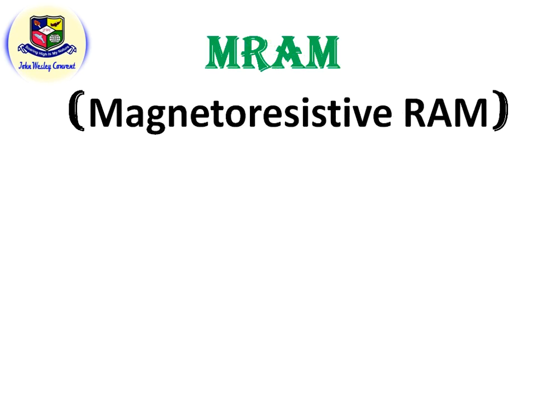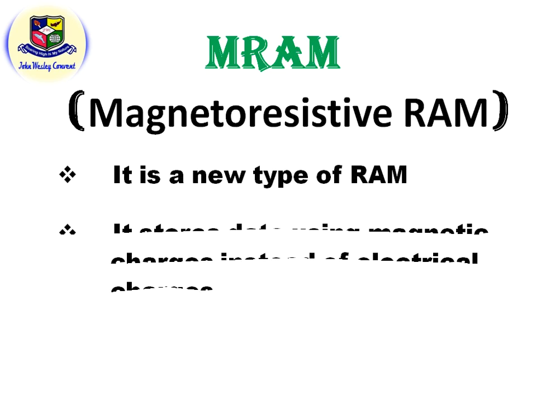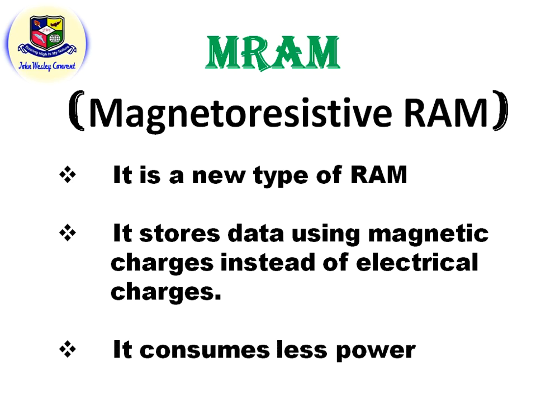Next is MRAM, which stands for Magnetoresistive RAM. It is a new type of RAM. It stores data using magnetic charges, whereas other RAM types use electrical charges. It also consumes very less power. So these are all the types of RAM.